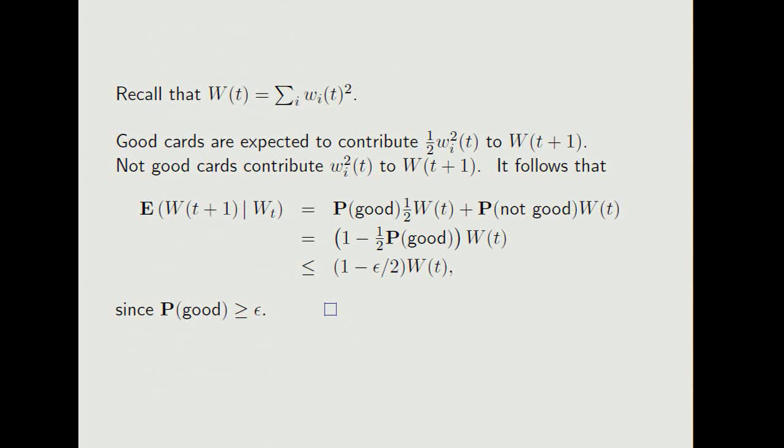So recall, W is the sum of squares. And we know that good cards, we expect to contribute half as much to the sum of squares after one step. Now if you work it out, it follows that the expected sum of squares at time t plus 1, given the value at time t, is the probability of a covered card being good, times a half the value at time t, plus the probability of being not good, times the full value.